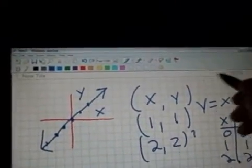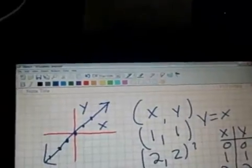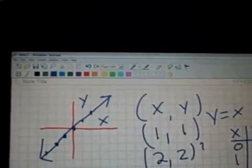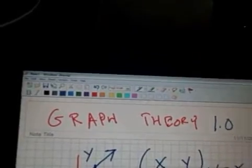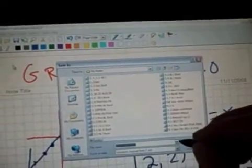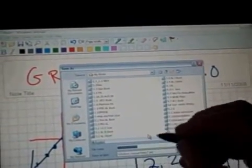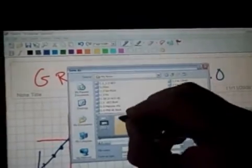Alright, so let's save this as graph theory 1.0. File, save as, Colvin, graph, let's delete.